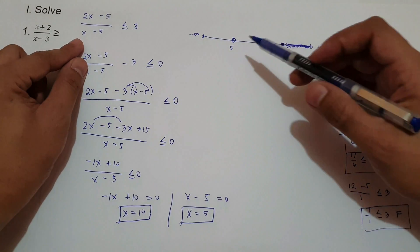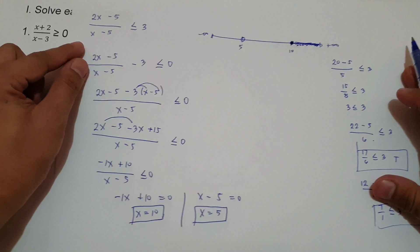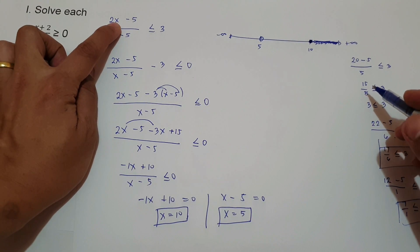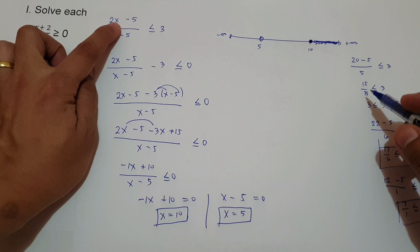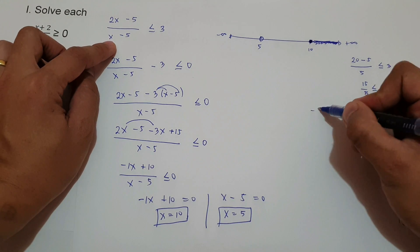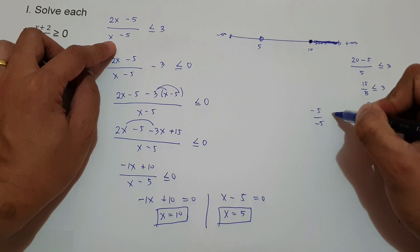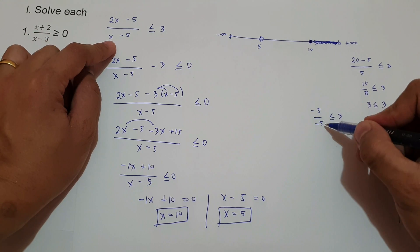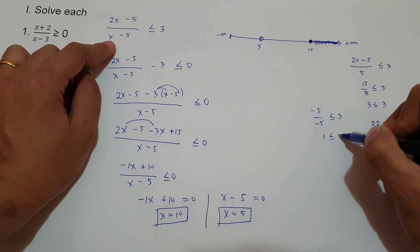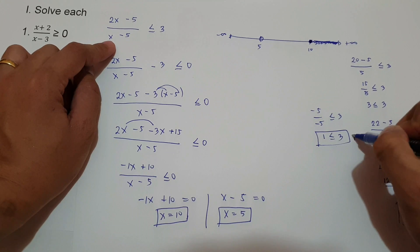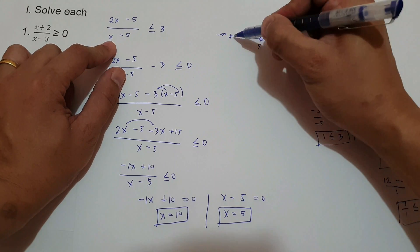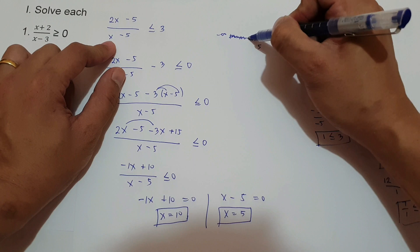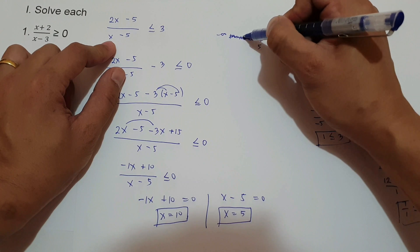For numbers less than 5, let's say 0: 2 times 0 minus 5 over 0 minus 5 equals negative 5 over negative 5 equals 1, and 1 is less than or equal to 3 — true. So this part of the graph is also part of the solution.